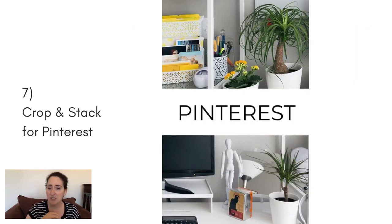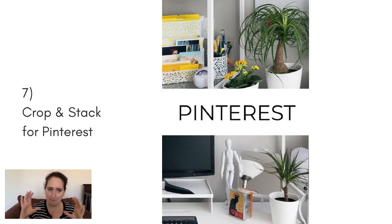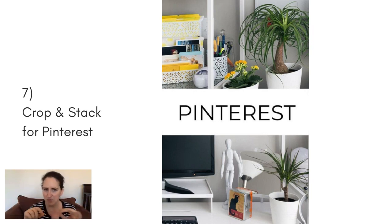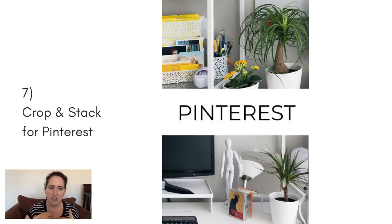Number seven is to use your image for Pinterest. You can do this by grabbing two sections of the image, stacking them on top of one another, and then putting a white strip — or whatever color you want — in between, with text in that area. It's perfectly sized for Pinterest, has the look and feel of your image, and is a super fast, easy way to make a Pinterest image for your next blog post.